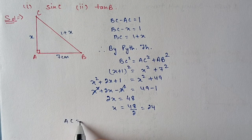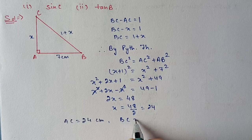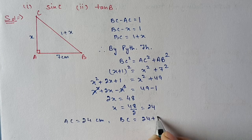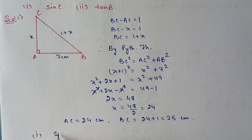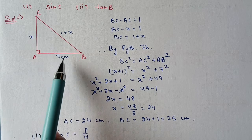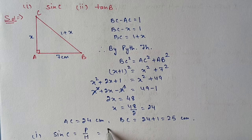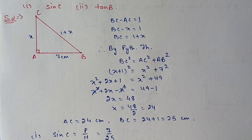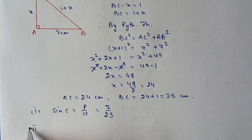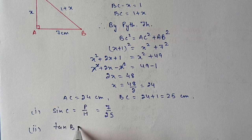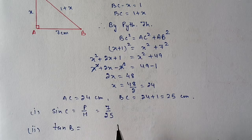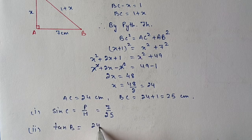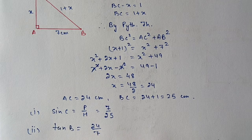So AC is 24 and BC is 1 plus x, which means 24 plus 1 equals 25 centimeters. Now, sin C means perpendicular by hypotenuse. For angle C, perpendicular is AB which is 7 and hypotenuse is BC which is 25, so sin C equals 7 upon 25. For tan B, perpendicular by base: perpendicular is AC which is 24 and base is AB which is 7, so tan B equals 24 by 7.